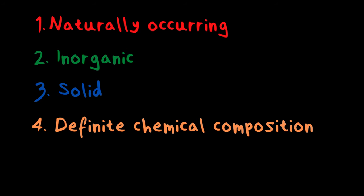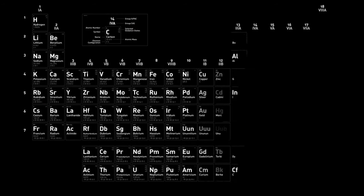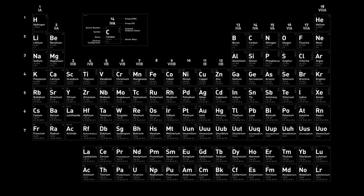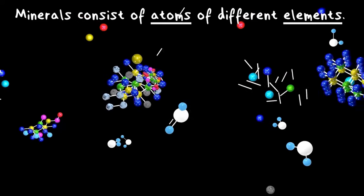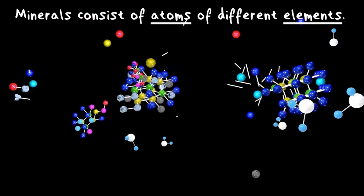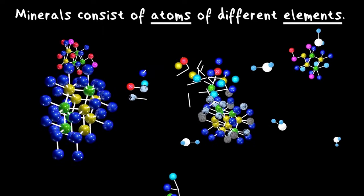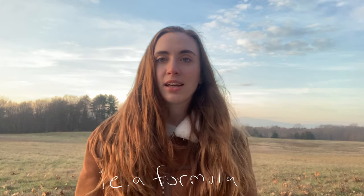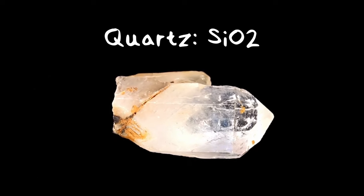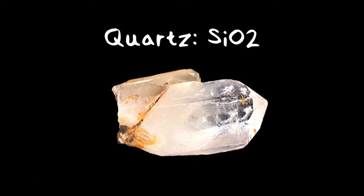The fourth characteristic of all minerals is that they have to have a definite chemical composition. All minerals are made out of elements from the periodic table — atoms of these elements make up the minerals. Minerals are the building blocks of rocks, and atoms are the building blocks of minerals. Every single time a mineral exists it has to have the same proportions of elements. The chemical formula of quartz is SiO2 — one atom of silicon for every two atoms of oxygen.